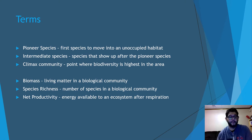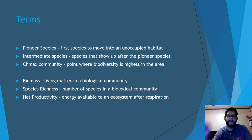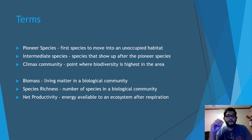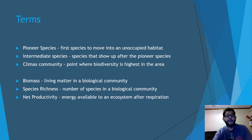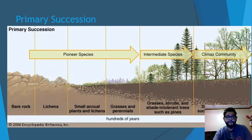Then you have the climax community, which has the highest biodiversity in the area over a long period of time. One of the ways we measure succession is by biomass — how much living matter is in the community — as well as species richness and net productivity. Species richness is whether there are many species, and net productivity is how much energy is available after respiration in that ecosystem.